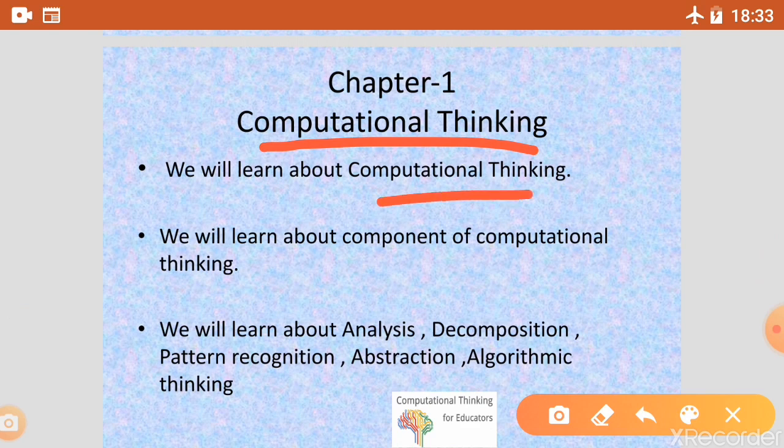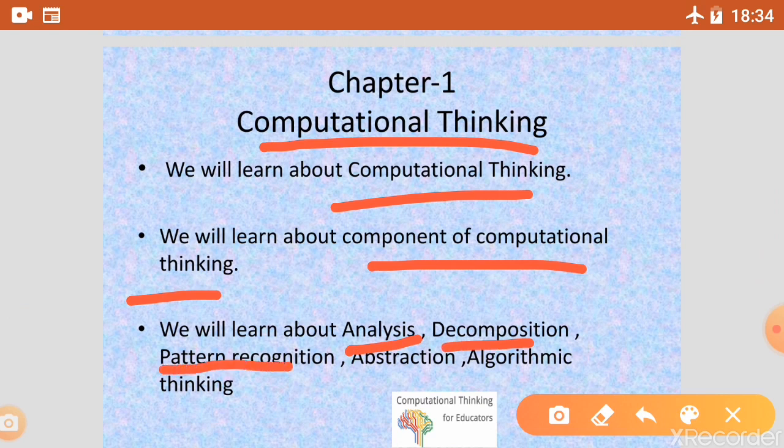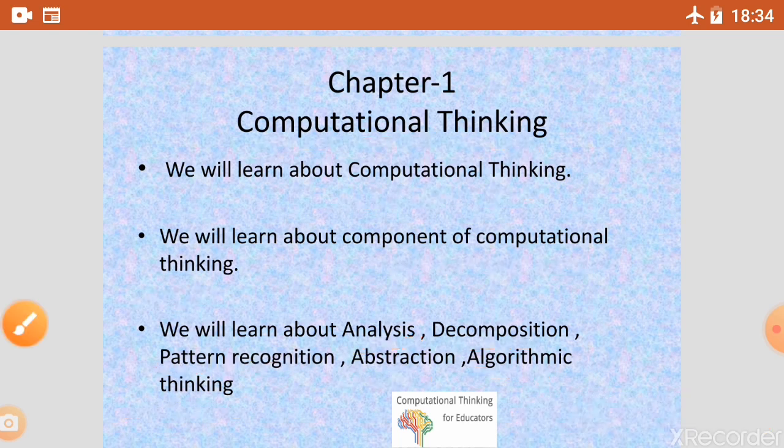Firstly we have to know about Computational Thinking. What is computational thinking? What is the work of computational thinking? After that we will learn the components of computational thinking: analysis, decomposition, pattern recognition, abstraction, and algorithmic thinking. Today we will discuss only the definition of computational thinking.